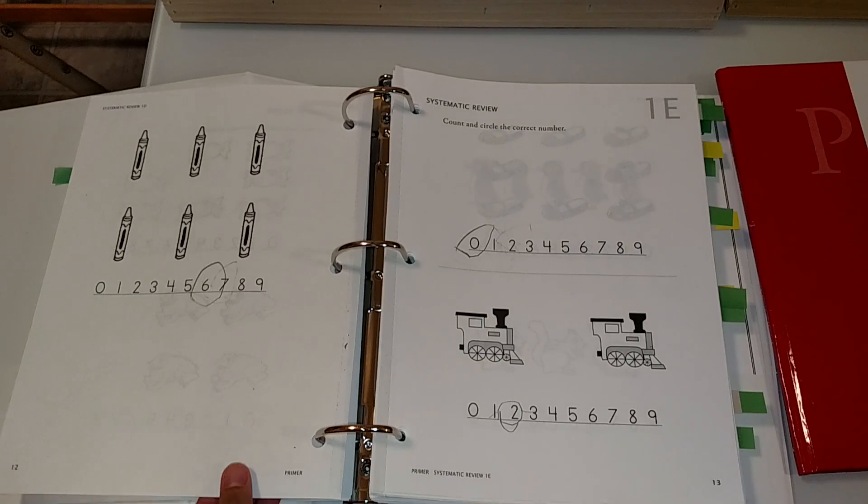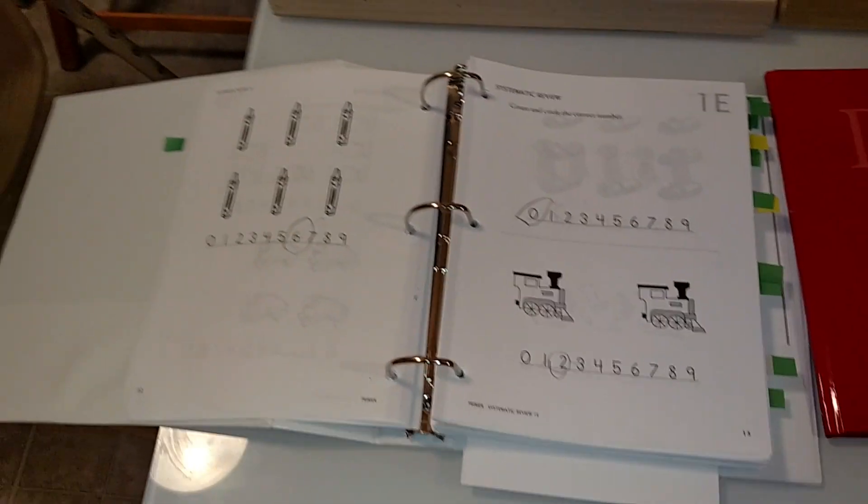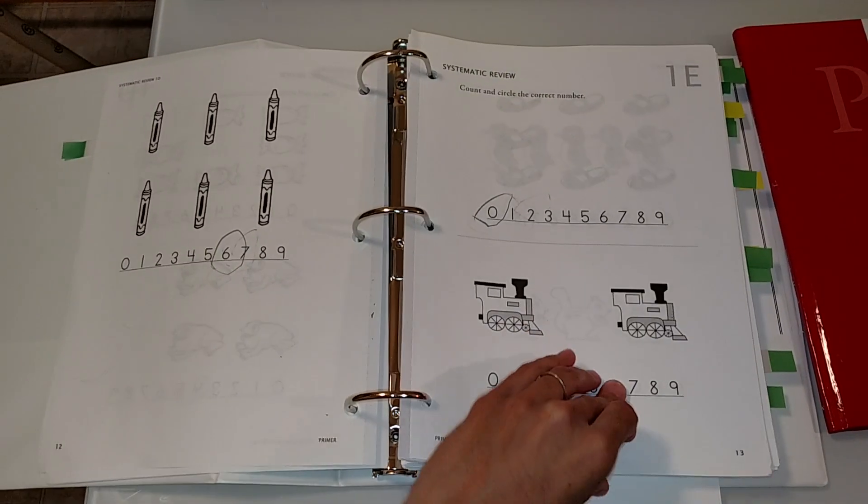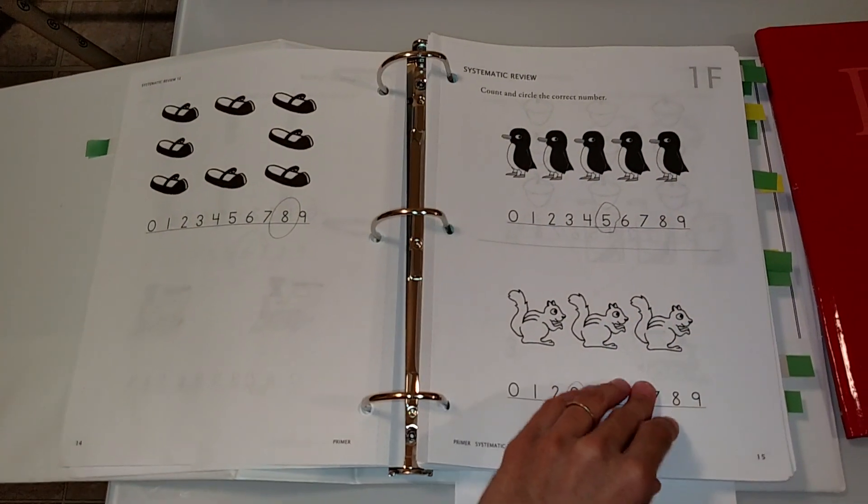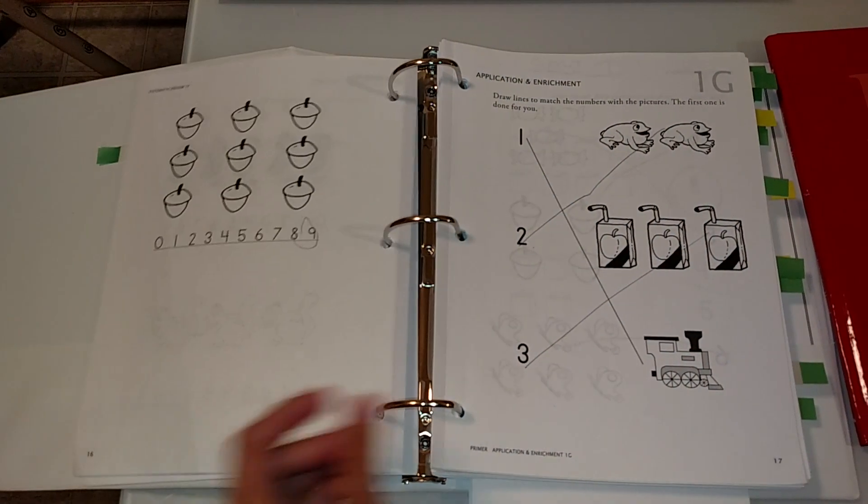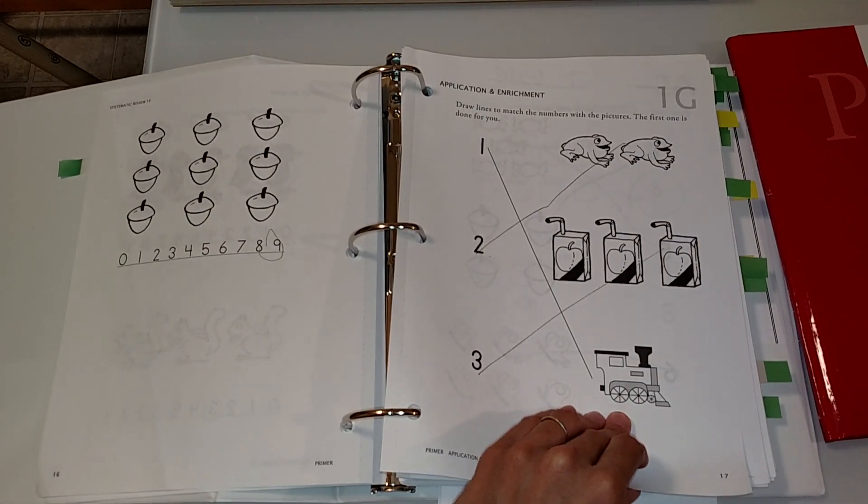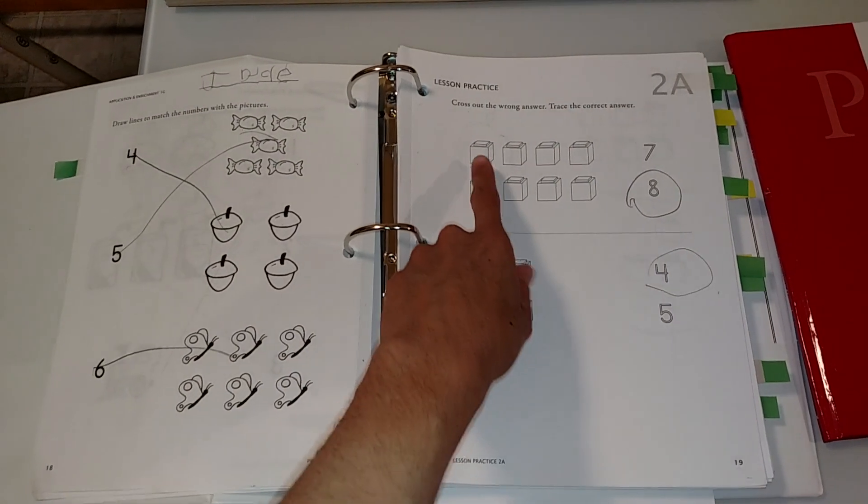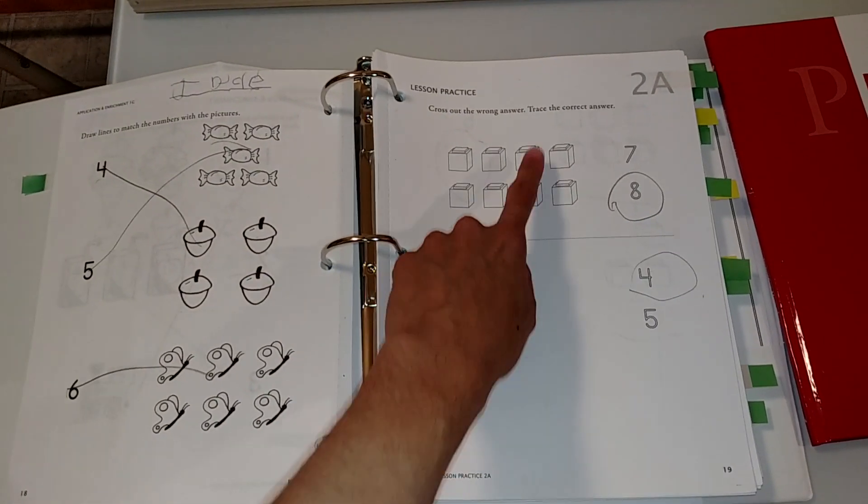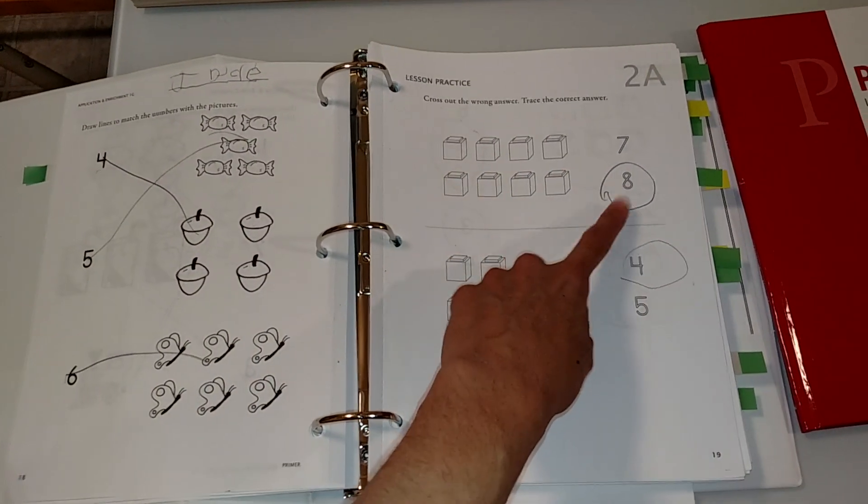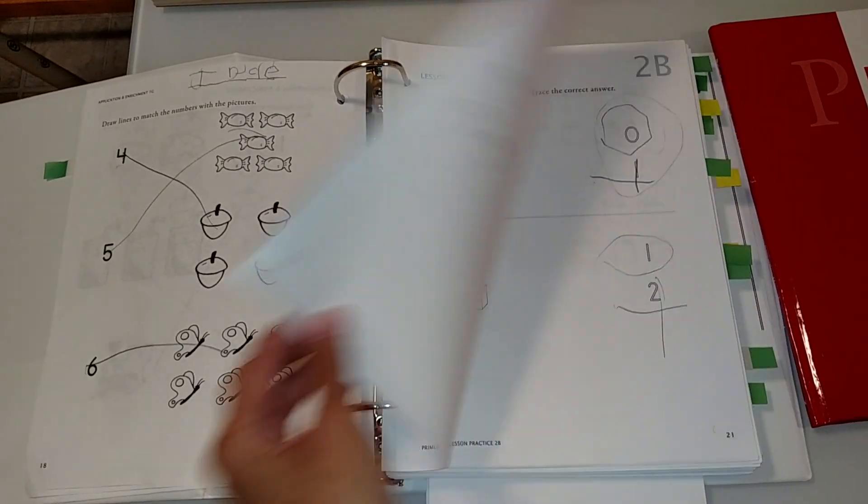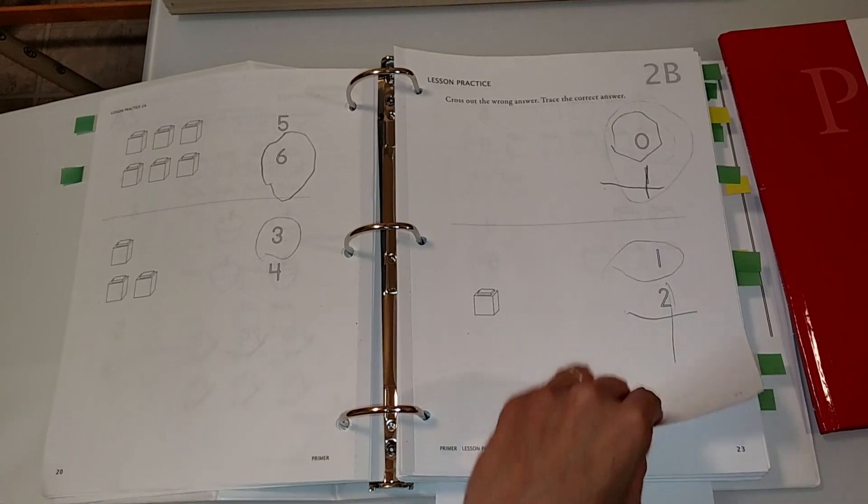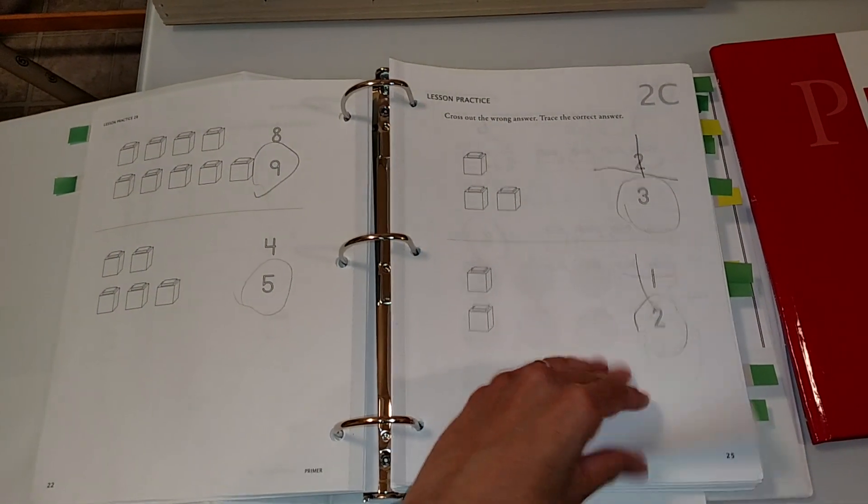And as you can see the book is not super colorful and I think it's great because it doesn't really distract children from the main purpose. Very direct to the point. It introduces concepts in different ways. Here we go again with the blocks. The child will place the blocks and then count and then circle. And here the child is asked to cross out the wrong answer and circle the correct one. Again using the blocks.